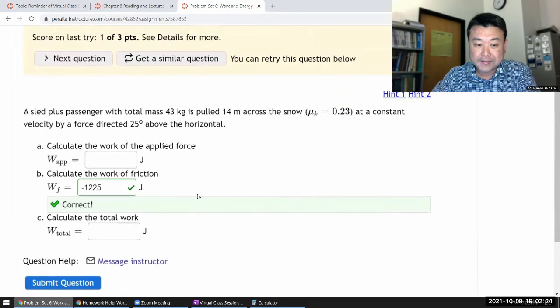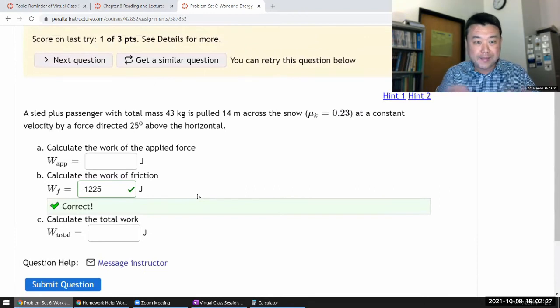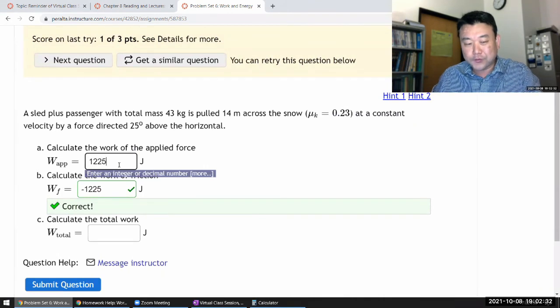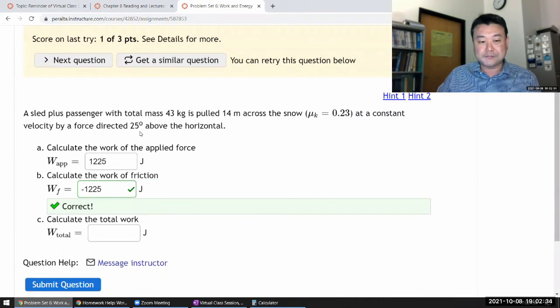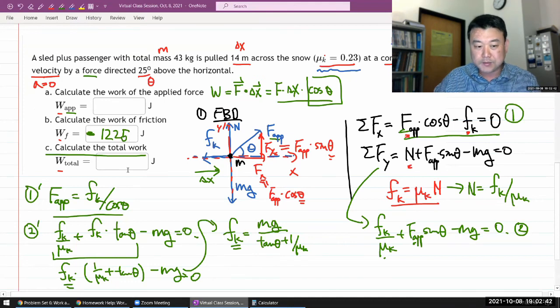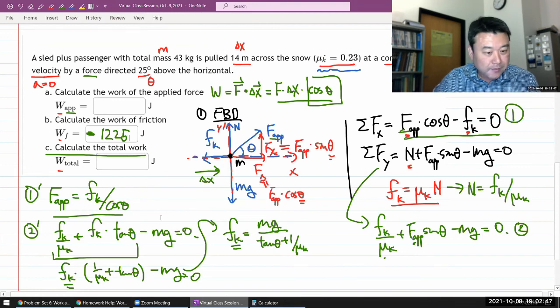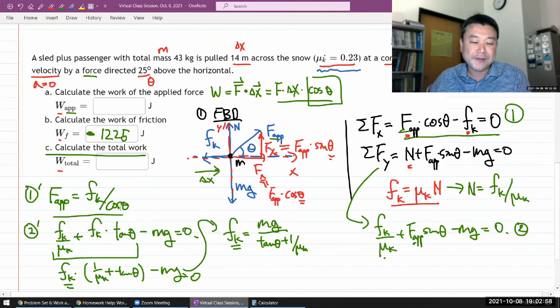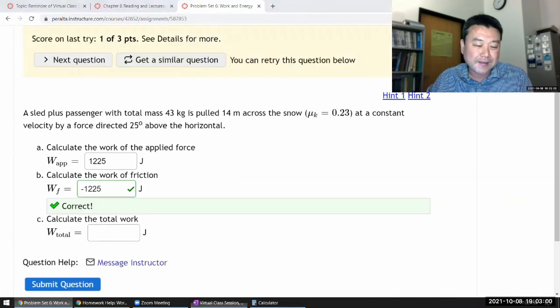And now that I've got this answer, I can actually answer the remainder without plugging in any more numbers. The work done by applied force, I know it's 1225. And I could go back and do the calculation that I promised I would. I could plug in this friction force in here, and then go through this work calculation. Cosine theta will cancel. Oh, in fact, there you see, basically, the portion of the applied force that's doing work is going to be the same as the friction force.